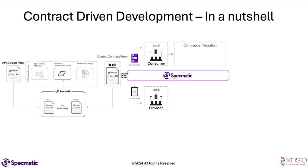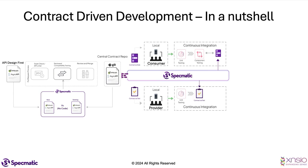At this point, each team can independently go through the continuous integration process. The consumer would first run unit tests, then component tests — and since component tests need the provider, Specmatic would provide the service as a stub in CI, again powered from the central Git repo. Similarly, on the provider side, during continuous integration they would run unit tests and then run all the contract tests against their implementation. If they want, they could also run other kinds of API workflow tests.